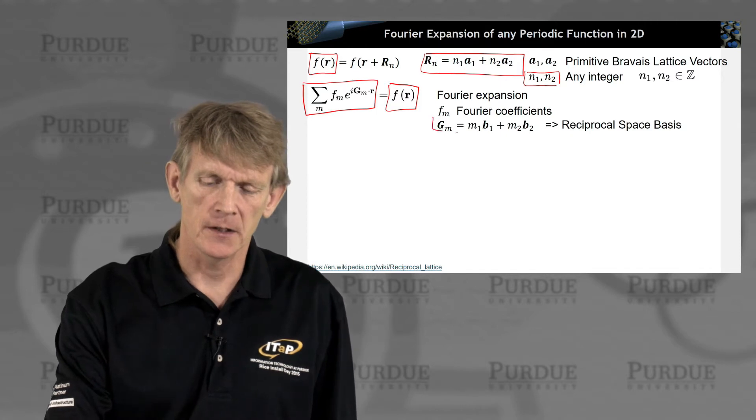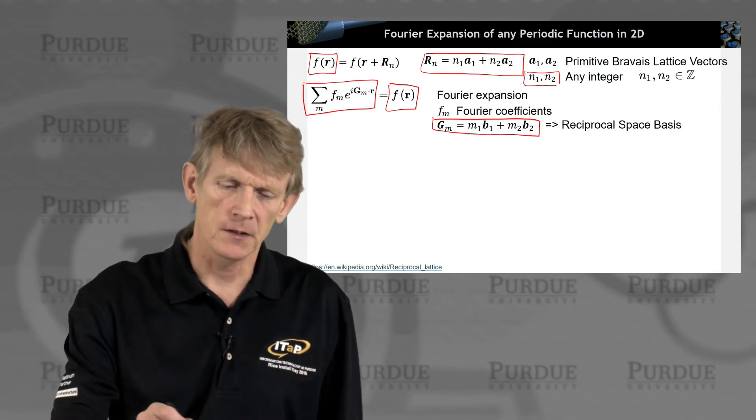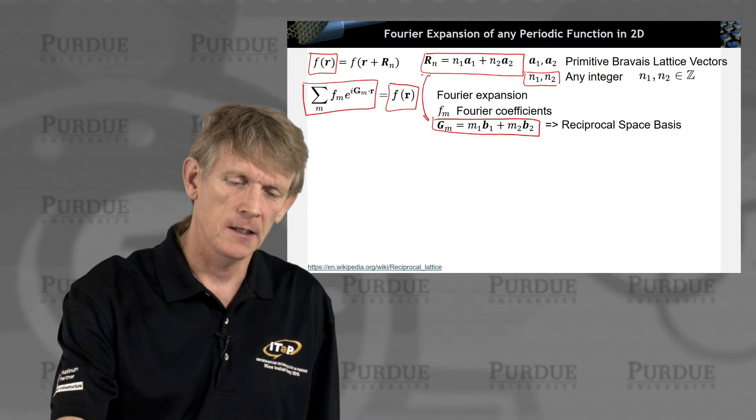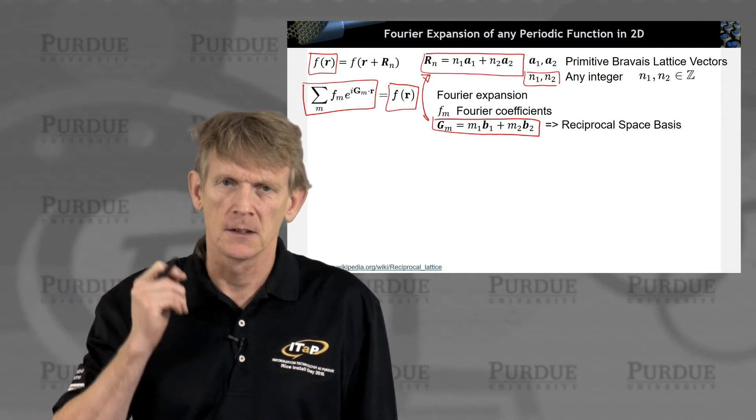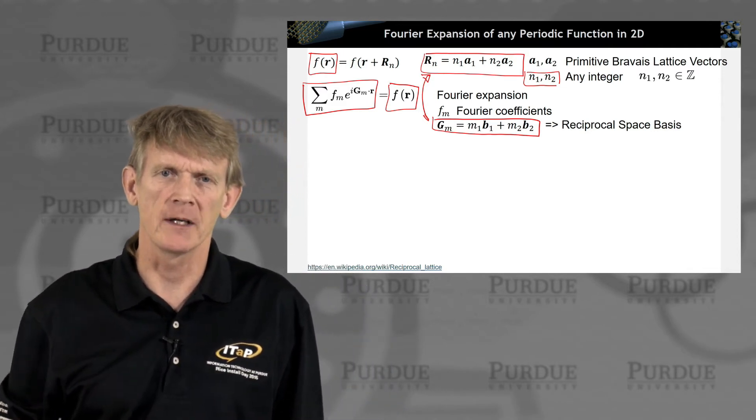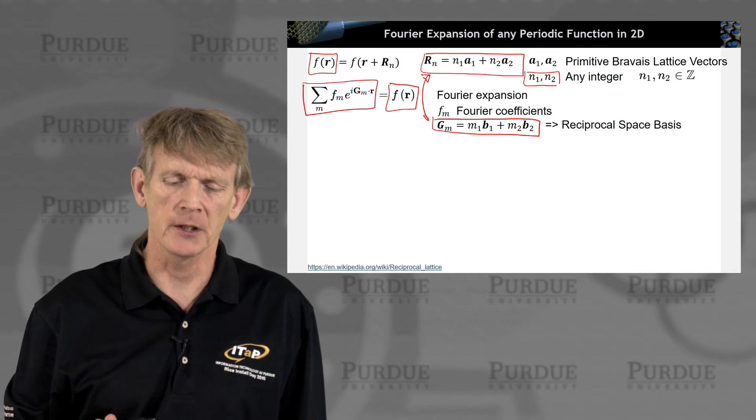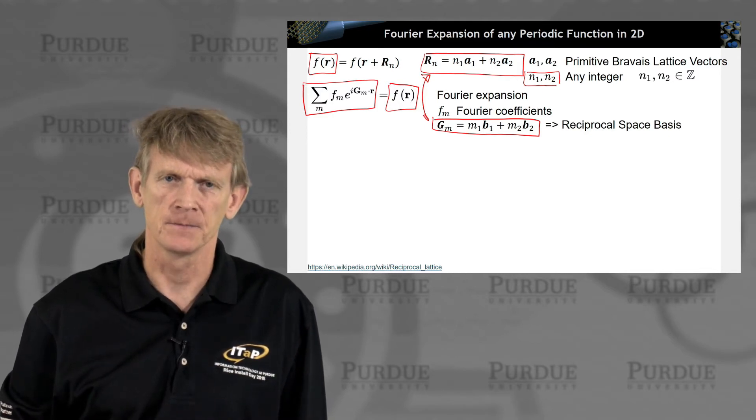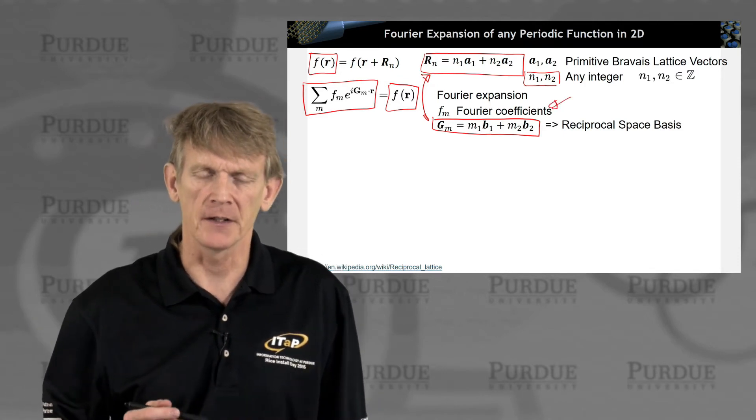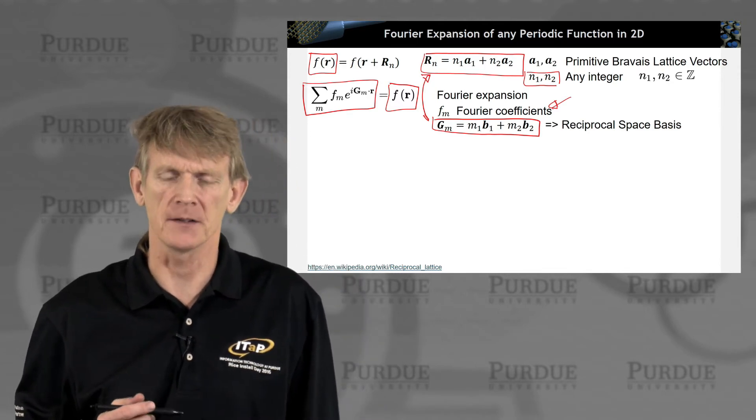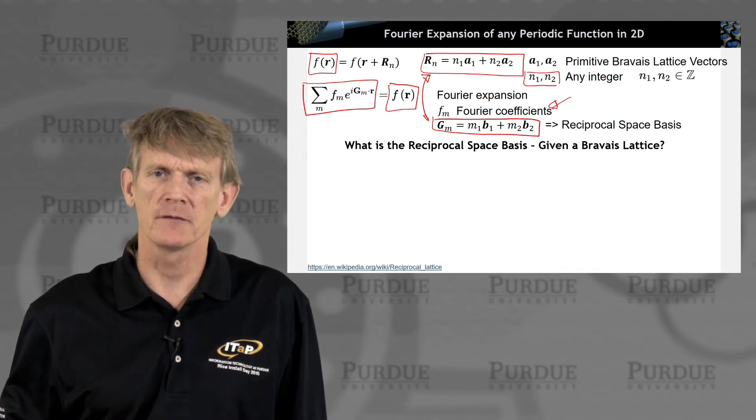So we call gm the reciprocal space basis. Right now we're interested in the relationship between Rn, capital Rn, and capital Gm. We have a Bravais lattice where physical properties repeat themselves according to real space, and we want to represent that into Fourier space. The question is, how do we get this reciprocal space basis? Later, when we worry about Schrödinger equation, we end up computing these Fourier coefficients on that basis. So right now we're just dealing with the basis. What is the reciprocal basis given any Bravais lattice?